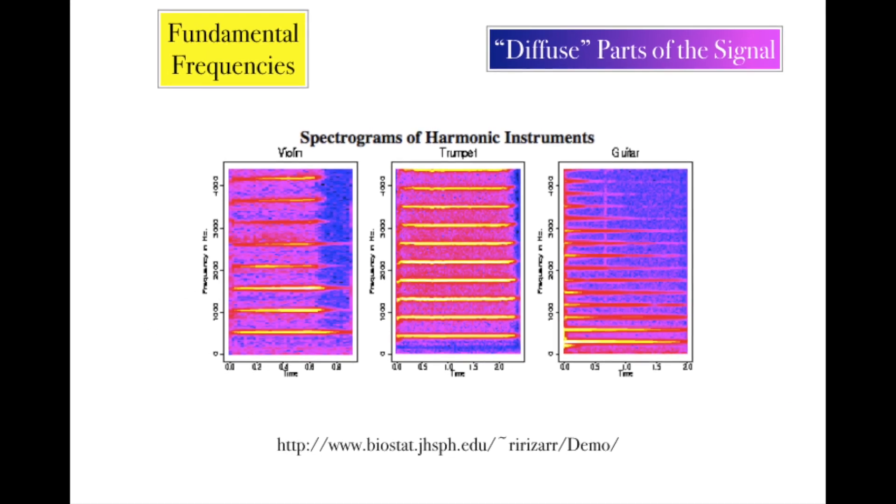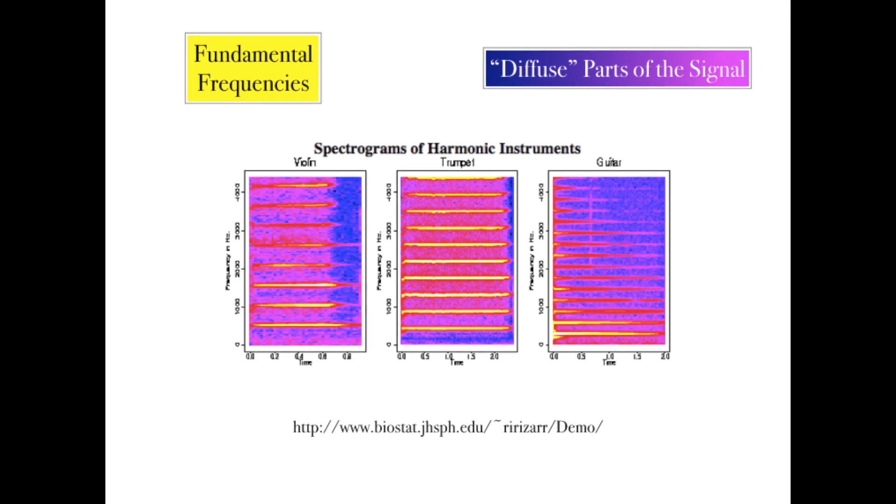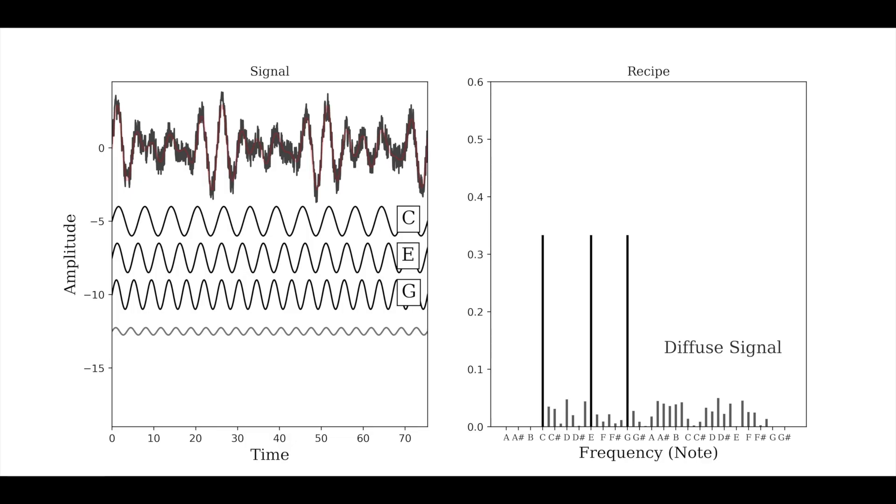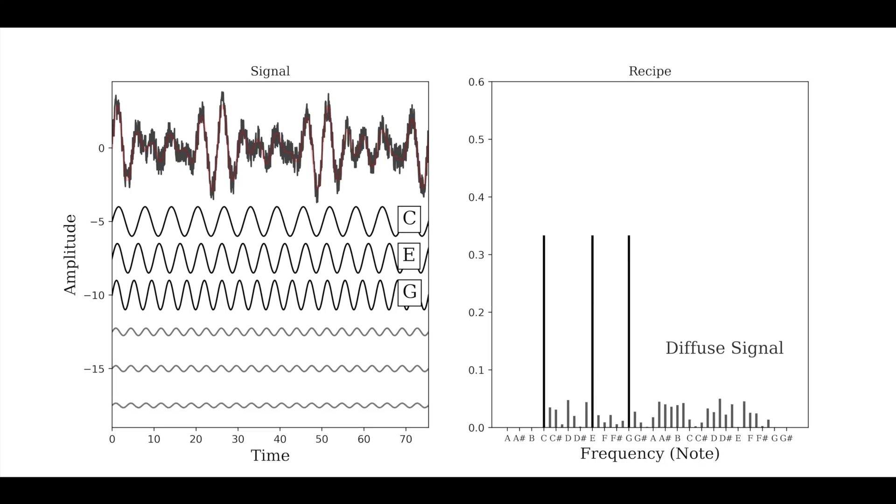But the Fourier transform can give us the recipe for any repeating signal, no matter how messy. If we look at the recipe for a messy signal, we see that it includes a bunch of softer notes at many different frequencies that add together to give us the messy chord we started with.